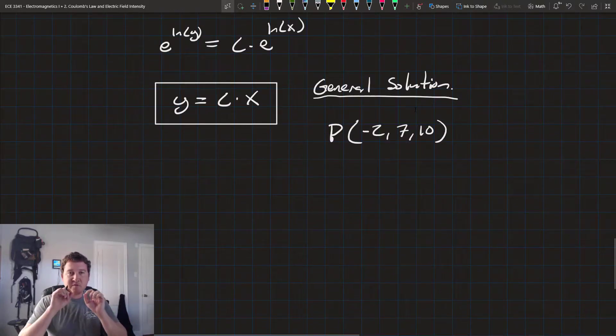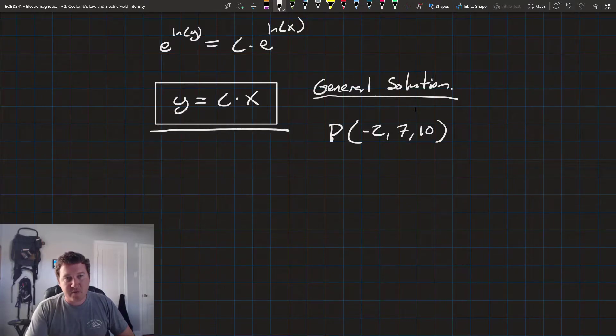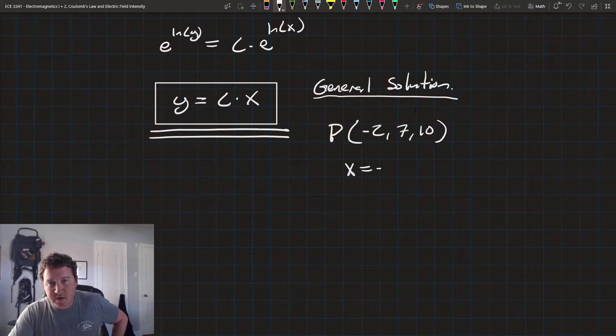So, now instead of having to calculate the electric field for that point, we now have a general solution for our electric field. And all we're going to do is plug in points. So, here x equals negative 2, y equals 7.